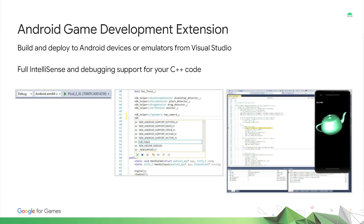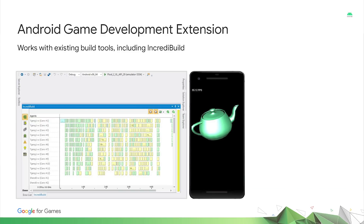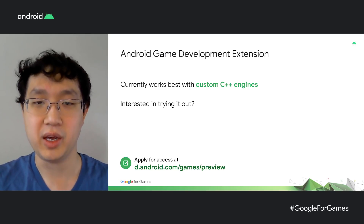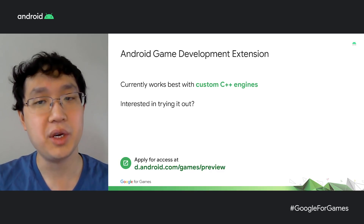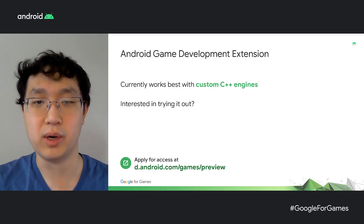Once you've done so, you can build and deploy the Android version of your game from Visual Studio to physical devices or an emulator. You'll have access to full IntelliSense support for your C++ code, and the extension features a fast and reliable debugging experience based on LLDB. The extension is compatible with existing build tools many of you use, such as IncrediBuild, so you can continue to take advantage of your current infrastructure to ensure that your build times are as fast as possible. This, combined with the new ADB, means you can be more productive when iterating on changes in your game. Currently, we work best with custom engines using C++, and we're collaborating with Epic on adding Unreal support in the future. If you're interested in being an early adopter and giving us feedback, apply for access at the URL on the screen.